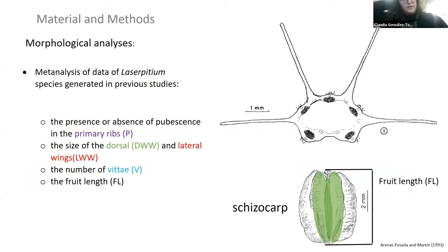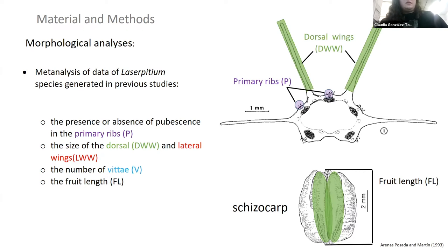So what did we do? The carpological analysis was basically a meta-analysis focused on four main features: the presence or absence of pubescence in the primary ribs, the length of dorsal wings, the length of lateral wings, and the number of vittae, which are the conducts found in the endocarp layer, and finally the fruit length.